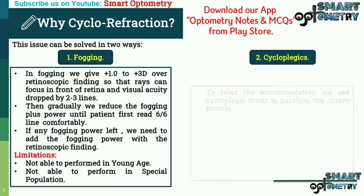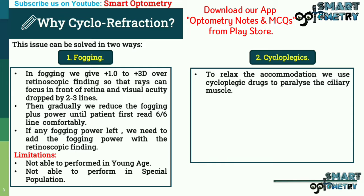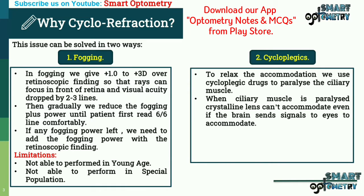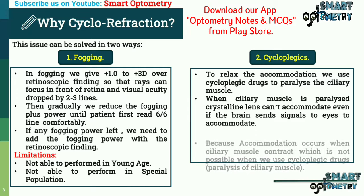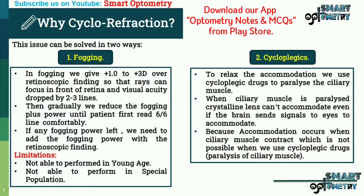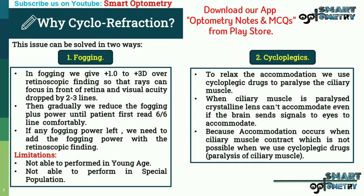The limitations of the fogging method can be overcome by cycloplegics. In cycloplegic refraction, to relax the accommodation we use cycloplegic drugs to paralyze the ciliary muscles. When the ciliary muscle is paralyzed, the crystalline lens cannot accommodate even if the brain sends signals to the eyes, because accommodation occurs when ciliary muscles contract, which is not possible when cycloplegic drugs are used.